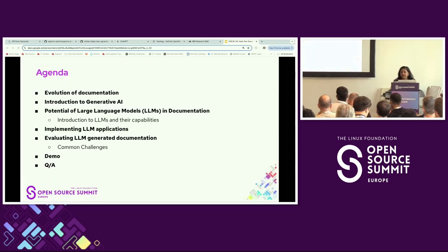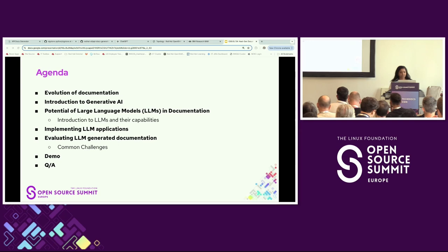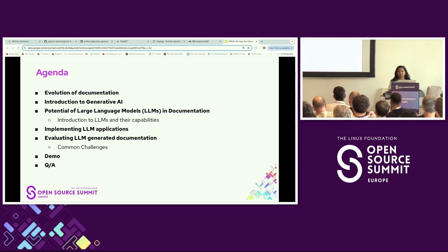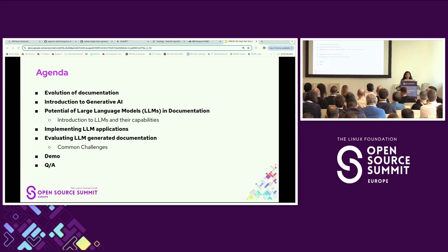Before we get started, I want to briefly go over what I want to cover in today's talk. I want to talk about the evolution of documentation over the years, followed by a brief introduction to generative AI, and then the potential of large language models or LLMs for documentation tasks and improving software development life cycles. We'll look at how to implement and evaluate LLM applications, then a small demo, and we'll wrap up with Q&A.